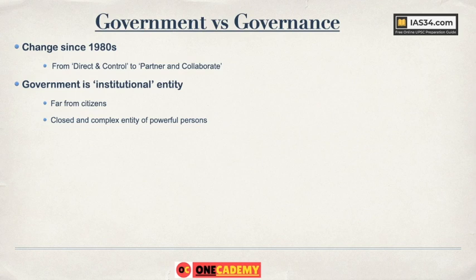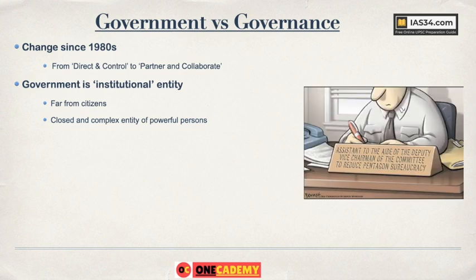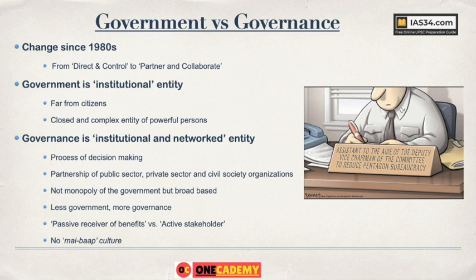Since the 1980s, it started changing into a partner and collaborate model, where citizen and government both are partners and they collaborate to achieve certain targets. Governance, on the other hand, is the process of decision making and also the process of service delivery. So it is not just an institutional concept — it is an institutional and networked entity, networked with different kinds of stakeholders, partnering with different stakeholders.